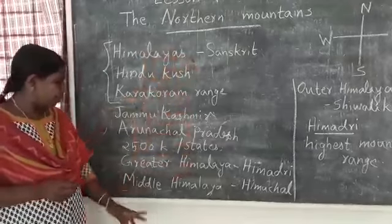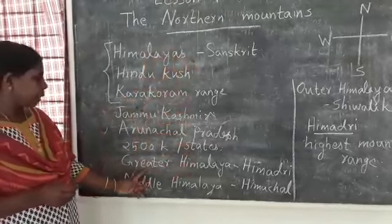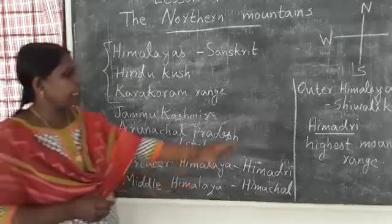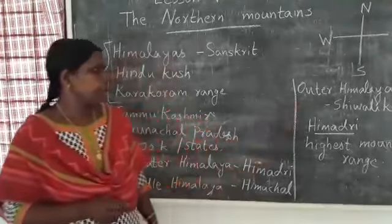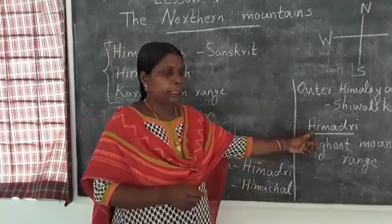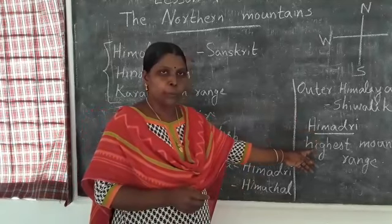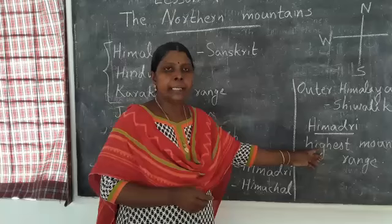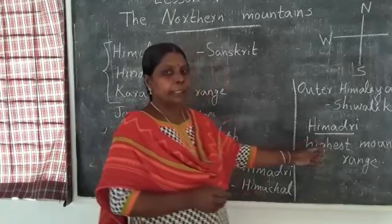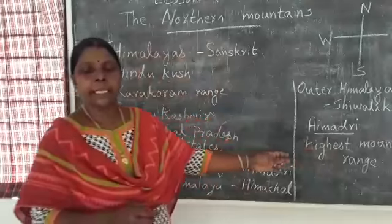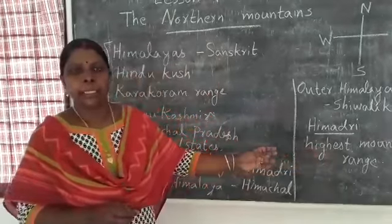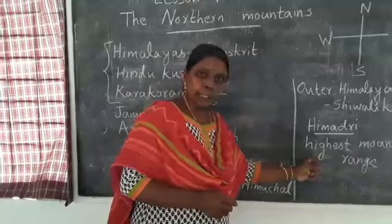These are the northern mountains. Himalaya is divided into three parts: Greater Himalaya, Middle Himalaya, and Outer Himalaya. About Himadri or Greater Himalaya: it is the highest mountain range. Great rivers like Ganga and Yamuna originate from here. Highest peaks like Mount Everest, Nandadevi, and Kanchanjunga are found here.